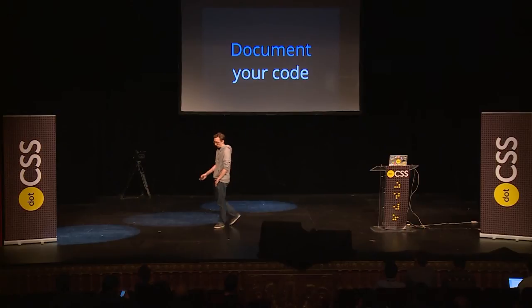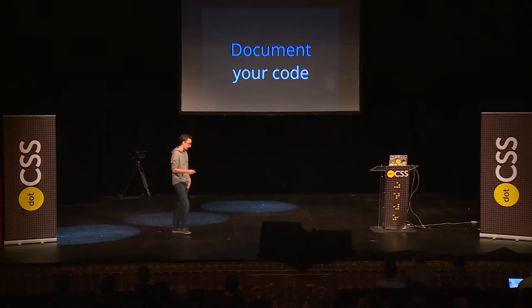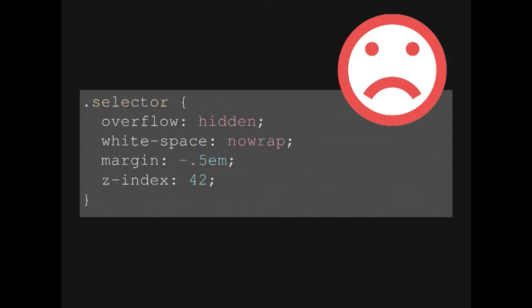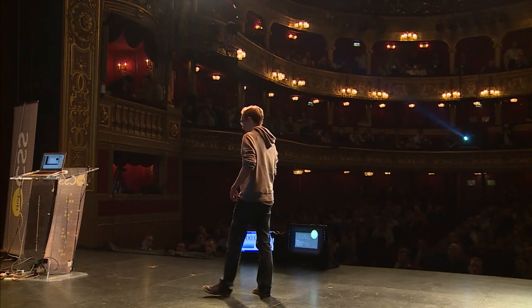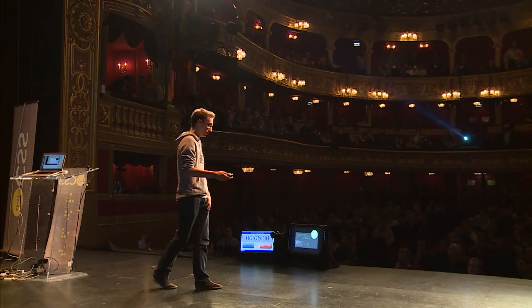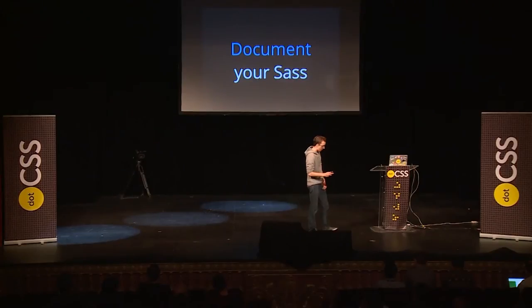Clean code, simple code — then document it. CSS, as we all know, is full of hacks and tricks. When you have code with hidden overflow, negative margins, and random z-indexes and you don't know what's going on, you have to comment it. It doesn't take much time — maybe 20 seconds — but it saves a lot of time debugging later. Someone might come along and remove the overflow: hidden because they think it doesn't belong there, and then everything breaks. Comment it — it doesn't take much time and helps a lot. Everything that's not obvious at first glance should be commented.